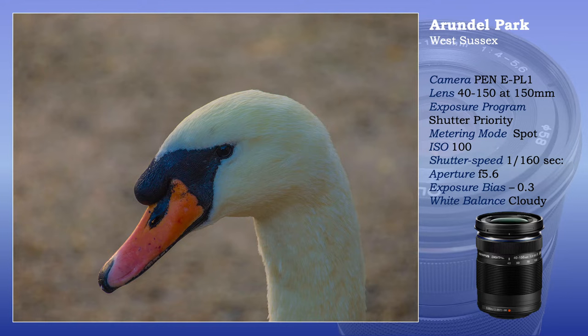The 40-150 is more useful for wildlife photography or when the subject cannot be accessed. However, notice that because of the lack of depth of field, the background is out of focus. Here, it helps the composition by making the swan stand out from the background. If it were possible to get closer to the swan with a standard lens, depth of field would increase and the background would be sharper.